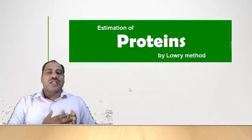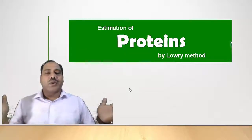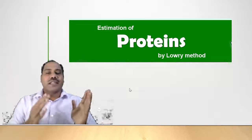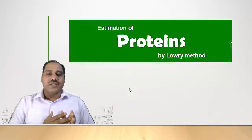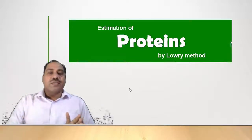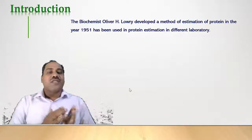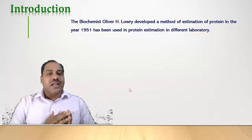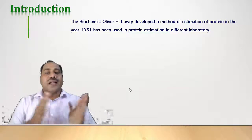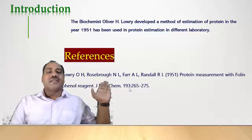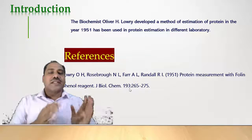Estimation of protein is an important aspect in many laboratories, and different procedures have been used for this purpose. One important method is the Lowry method of protein estimation. This method was developed by biochemist Oliver H. Lowry in the year 1951 and has been widely used in different laboratories.